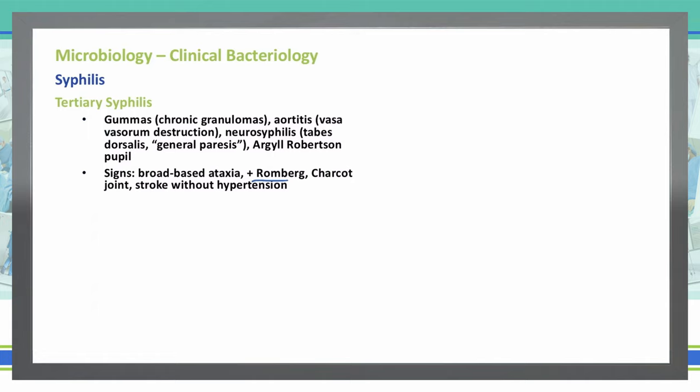In patients with neurosyphilis, we need to test the spinal fluid. We perform a spinal tap and check it with the VDRL-RPR, the FTA-ABS, and the PCR test. We want to confirm neurosyphilis in order to treat it appropriately.